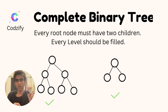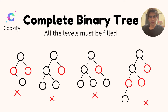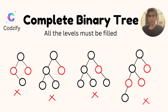For a complete binary tree, every node must have two children and every level should be filled. As you can see in both valid examples, all levels are filled. In the counterexamples, all levels are not filled — the left part is missing in one, another has only a right node instead of a left node, and another has a missing node entirely — so none of these are complete binary trees.